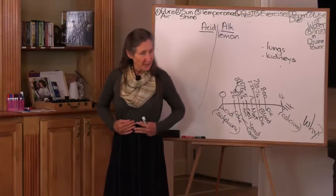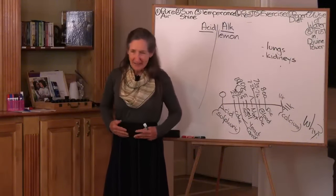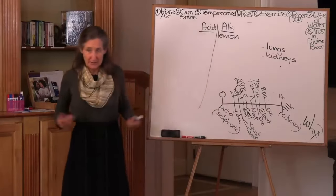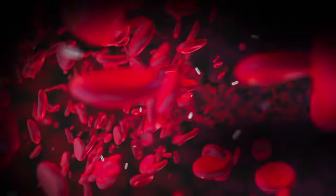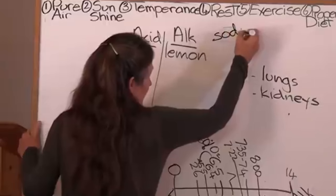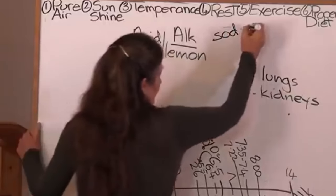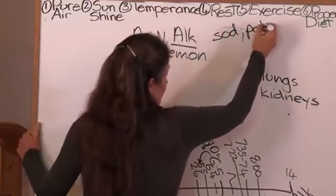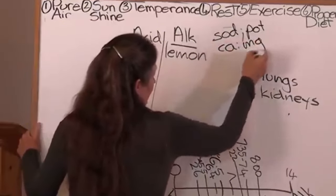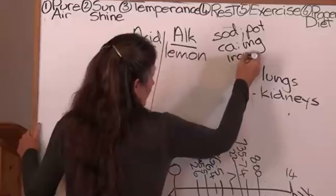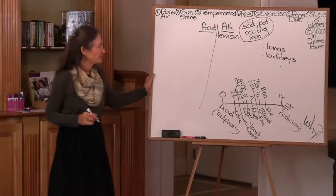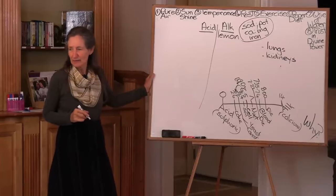But when it is broken down in the gut and the minerals are dispersed and absorbed into the blood and thus to the tissues, it has an alkaline effect because the lemon is high in the alkaline minerals, which is sodium and potassium, calcium, magnesium and iron. These are the alkaline minerals. And the lemon is high in the alkaline minerals. Don't you love the lemon?